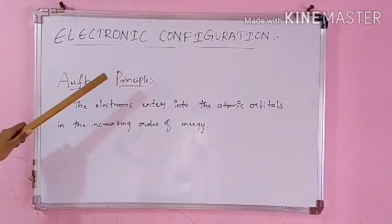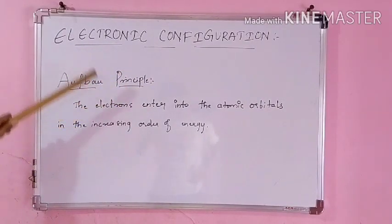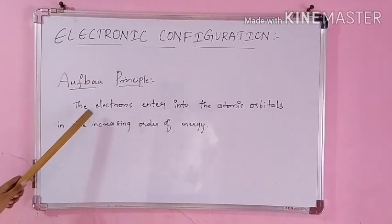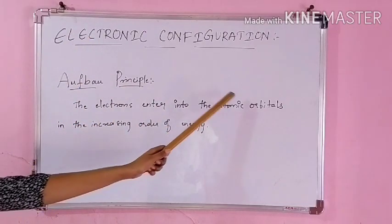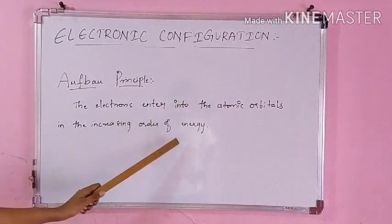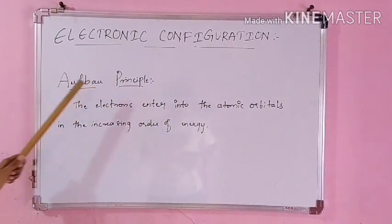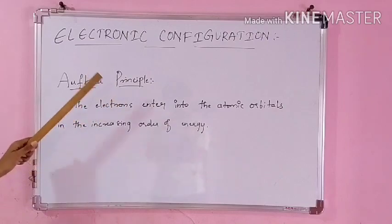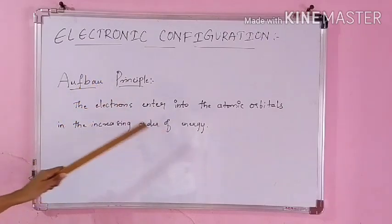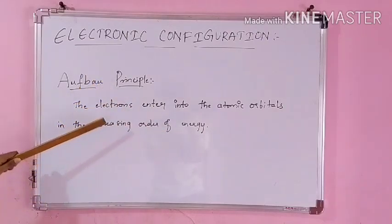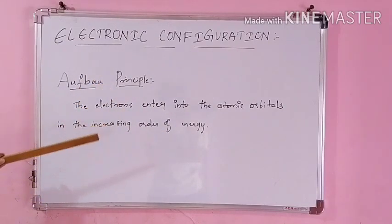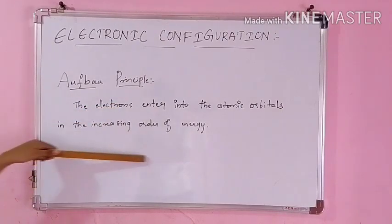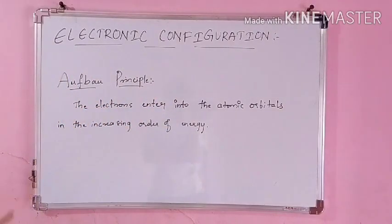The Aufbau principle gives the rule for writing the electronic configuration. It says that the electrons enter into the atomic orbitals in the increasing order of the energy — the orbital which is having lesser energy should be filled first, and then the greater energy.